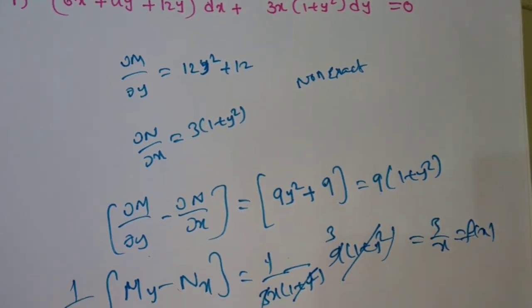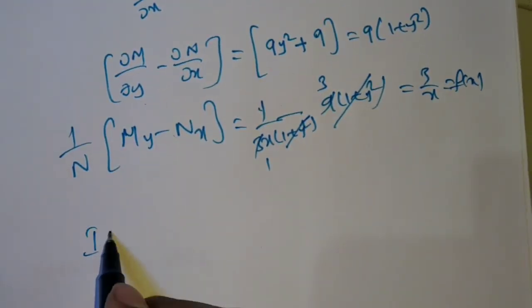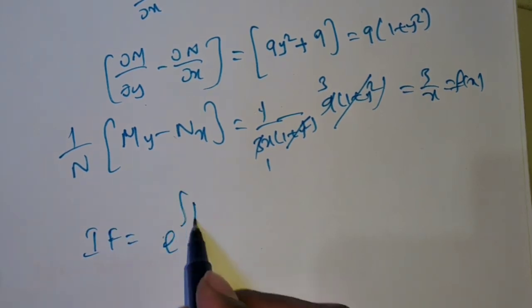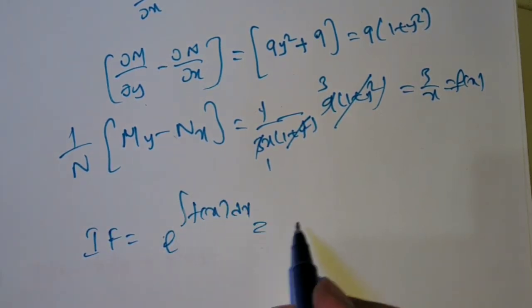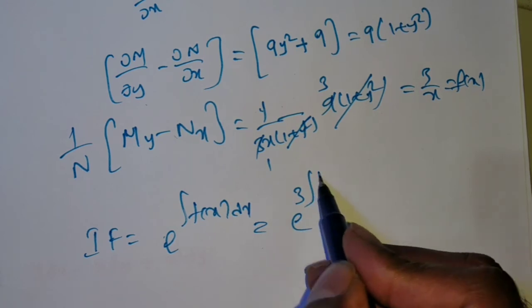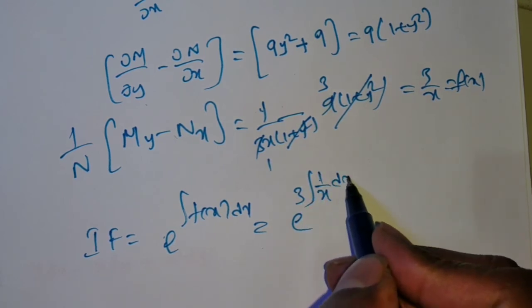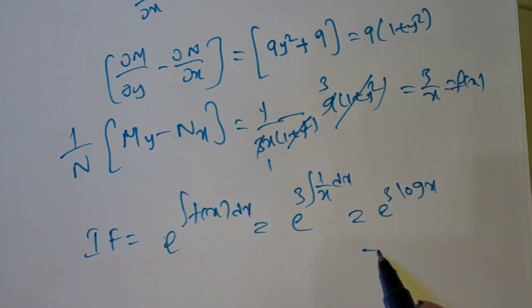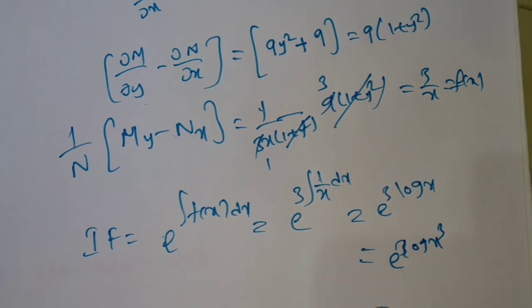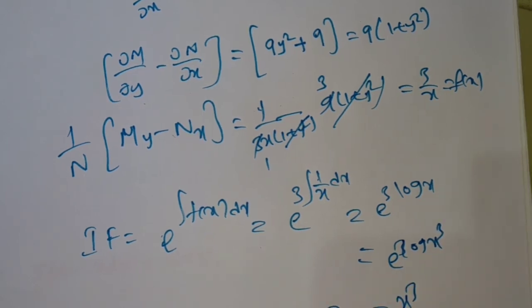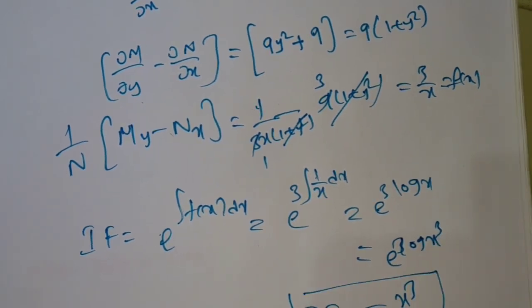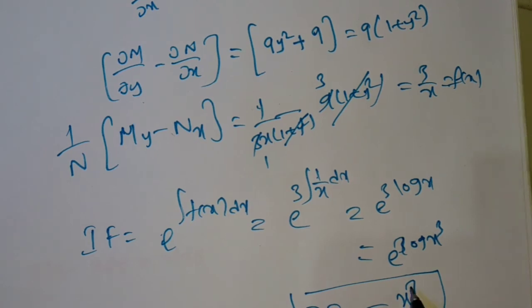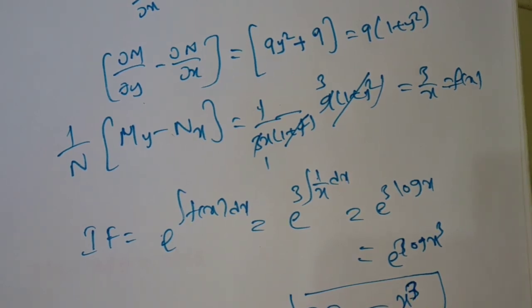Since f(x) = 3/x, the integrating factor is e to the power of integral 3/x dx = e^(3 log x) = x³. So x³ is the integrating factor. Is it clear how to find the integrating factor for a non-exact differential equation?